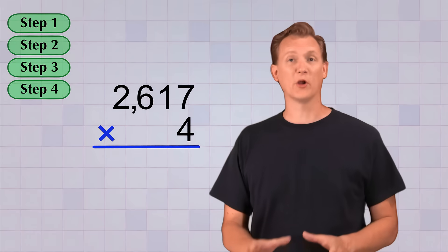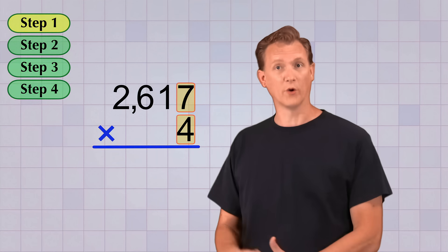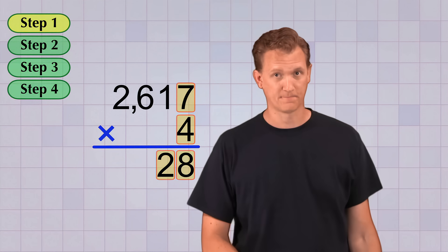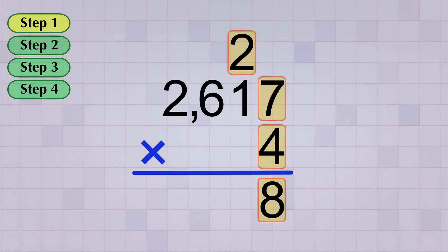Here we go with the first step. We multiply the bottom digit by the top digit in the ones place. 4 times 7 equals 28. Because we have a two-digit answer, we need to carry the digit that'll be in the way. So we carry the 2 to the top of the tens column, and we leave the 8 where it is.